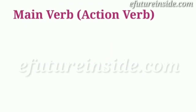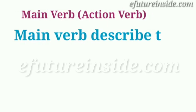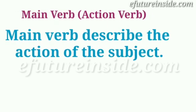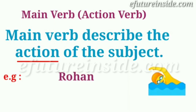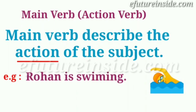First we will understand what is a main verb. Main verb describes the action of the subject — meaning, what action or activity the subject is doing. For example: 'Rohan is swimming.' Here Rohan is the subject, and the activity — what is happening — is swimming. So 'swimming' is the main verb.